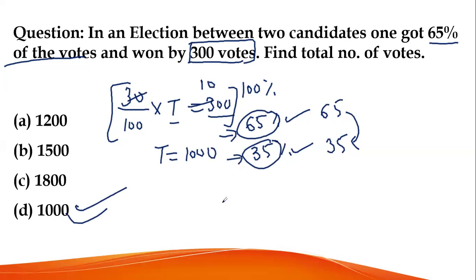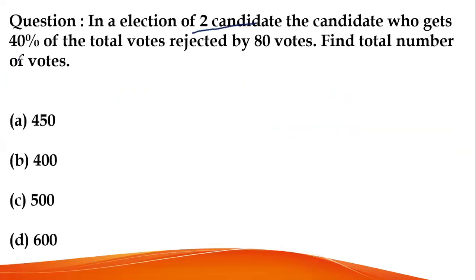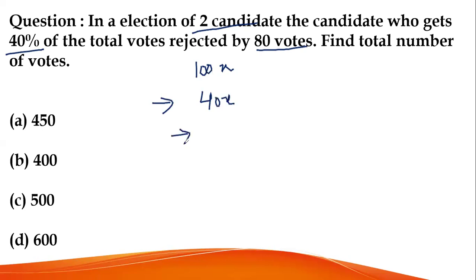This is clear. In an election between two candidates, the candidate who gets 40% of the total votes is rejected by 80 votes. If total votes = 100x, then the first candidate gets 40x votes and the other gets 60x votes. The winner wins by 80 votes.